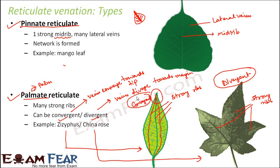The key observation is that veins and veinlets are not arranged in any specific fashion in both cases. Whether it is pinnate reticulate or palmate reticulate, the arrangement is haphazard. The only difference is that in pinnate reticulate you have one strong midrib, whereas in palmate reticulate you have many strong midribs.